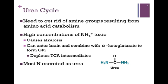Glutamate is also a neurotransmitter, so we might also disrupt those interactions. Therefore, we need to incorporate ammonia into a molecule that is non-toxic. Most of the nitrogen that is excreted as waste is done so in the form of urea — a ketone group with amine groups on either side.